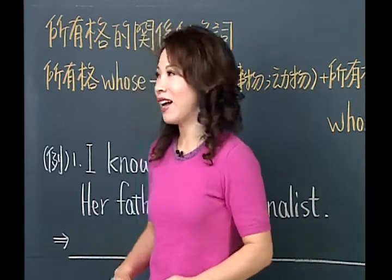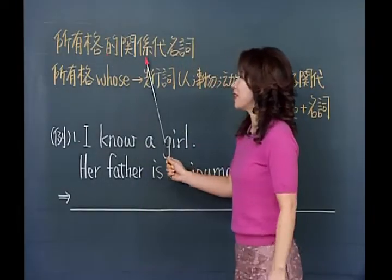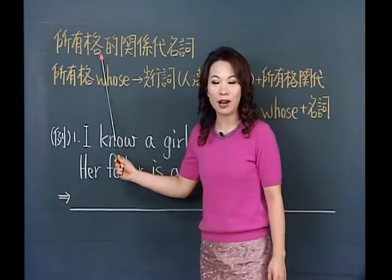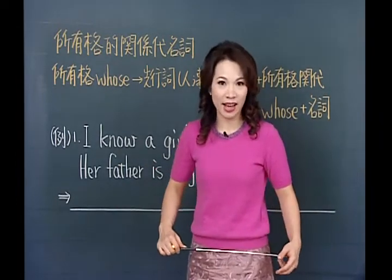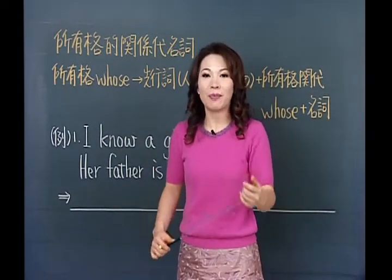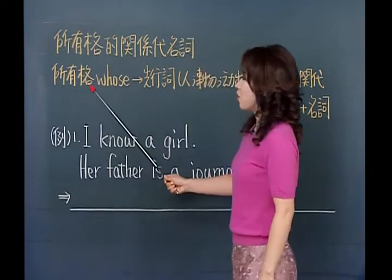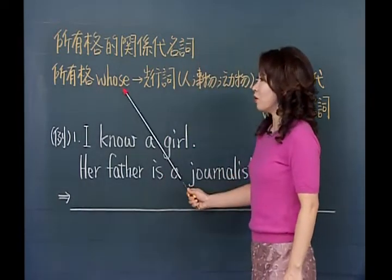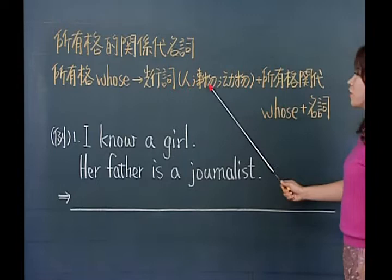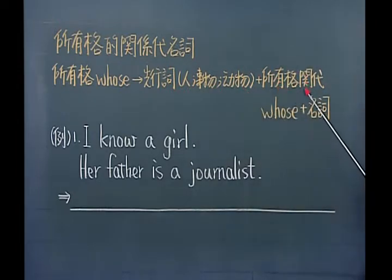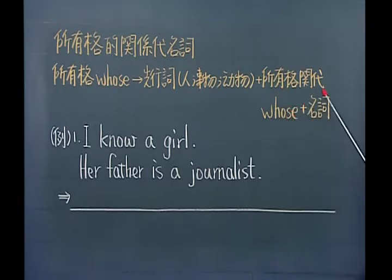主格关带的重点已经告诉同学了，接下来要看的是所有格的关系代名词。所有格关带whose，先行词不管是人、事物或动物都可以用，是通用型的。所有格关带whose的后面跟的是名词，看到名词，前面用whose这个所有格。